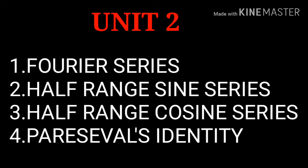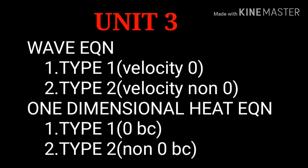Then Unit 2. The important problem is half-range sine and cosine series — these two are very important problems. Next, the Fourier series — we will talk about general problems. That's the theory of Parseval's Identity. So, let's look at that. In this unit, we will talk about this topic.